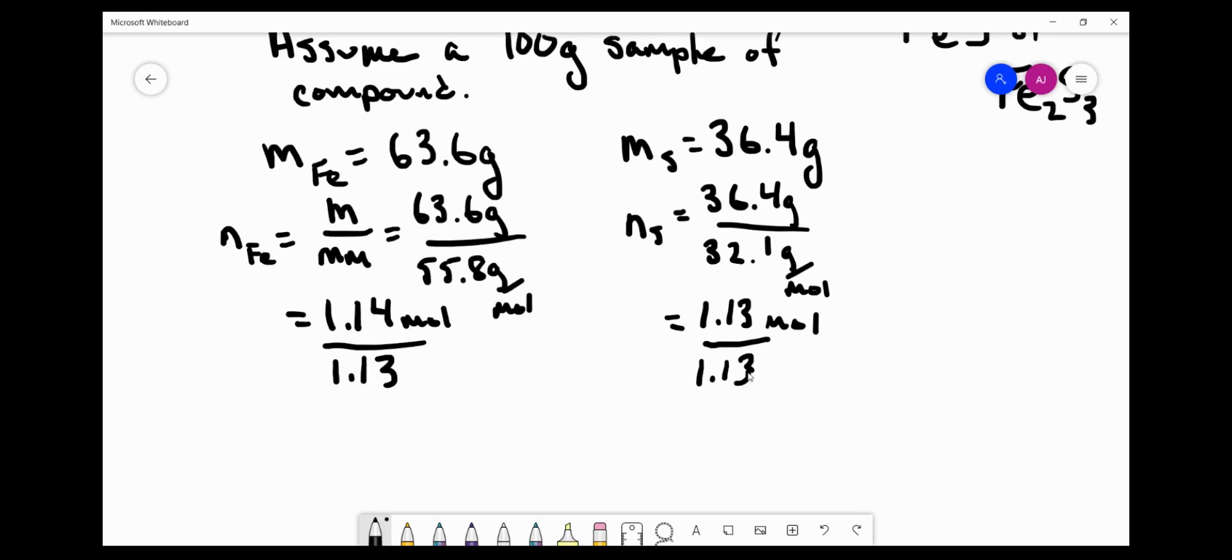When I divide a ratio by the same number, that keeps the ratio the same. But what that does here is to take the smallest value and turn it into a one. So a 1.14 to 1.13 ratio is the same as a 1 to 1.02, which is approximately equal to a one-to-one ratio. So iron and sulfur in this formula are in a one-to-one ratio, which tells me the empirical formula is FeS.